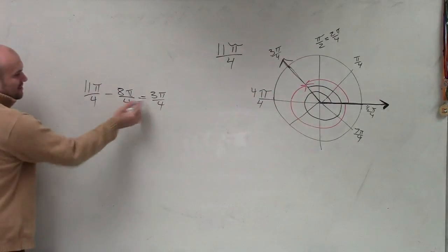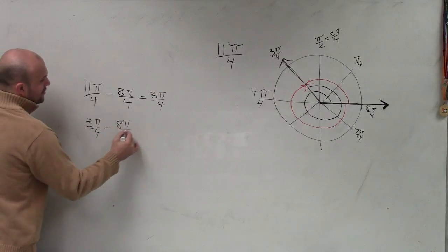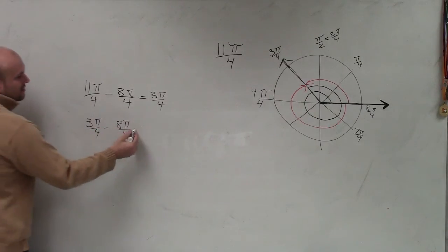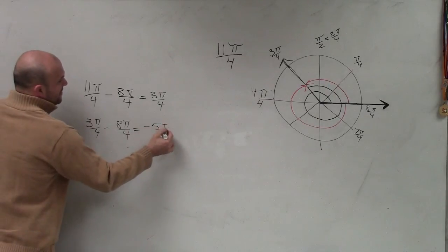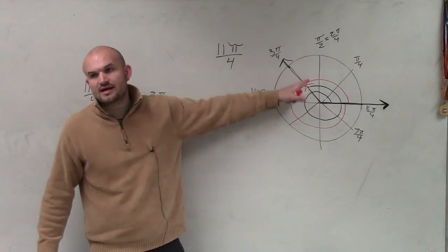Then, I can do that again, 3 pi over 4 minus 8 pi over 4. Just keep on adding this revolution, and when I do that, I get negative 5 pi over 4, which again, we confirmed with this angle.